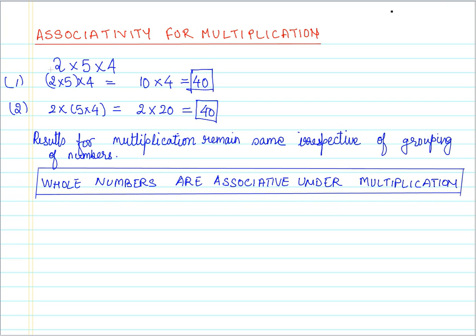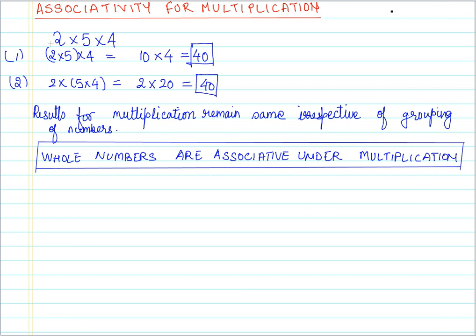Now, what is the importance of this property? How is this associativity important for us? Let us try to have a look at a couple of examples which will make it more clear. We are going to discuss about the importance of associative property for multiplication. Let us say that we have to multiply 12 by 35.